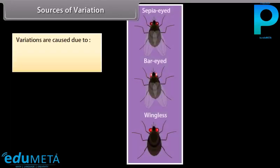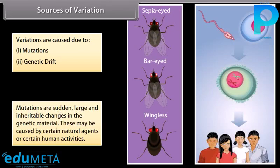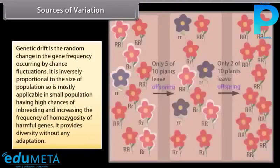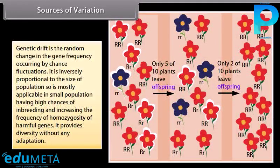Variations are caused due to mutations and genetic drift. Mutations are sudden, large and inheritable changes in the genetic material, and may be caused by certain natural agents or certain human activities. Genetic drift is the random change in gene frequency occurring by chance fluctuations. It is inversely proportional to the size of population, so is mostly applicable in small populations having high chances of inbreeding and increasing the frequency of homozygosity of harmful genes. It provides diversity without any adaptation.